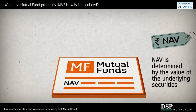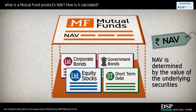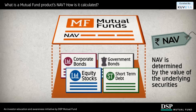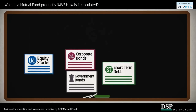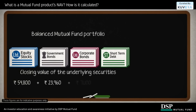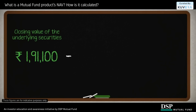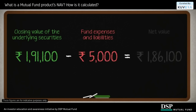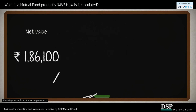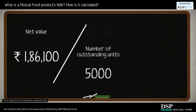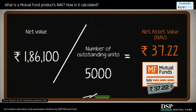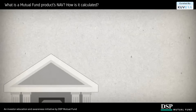The major determinant of NAV is the value of all the underlying securities that form part of the portfolio. To calculate the NAV, we first consider the closing value of all the securities the product portfolio holds. From this total value, we deduct the expenses the product incurs as well as its liabilities. The resultant value is then divided by the number of units of that mutual fund product, giving us the NAV of one unit.